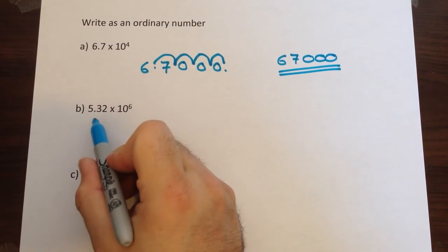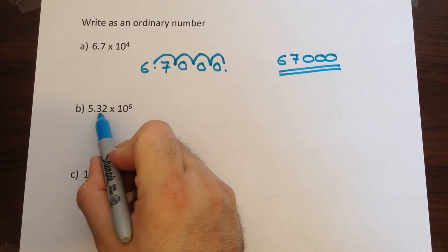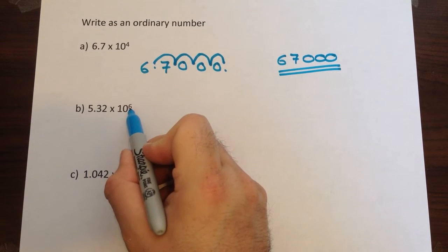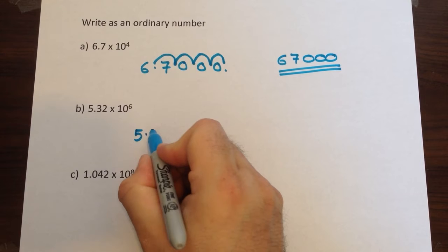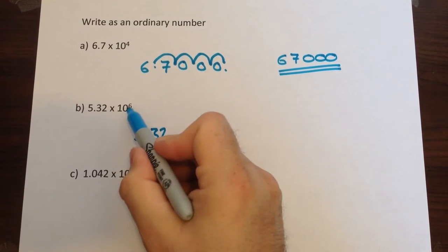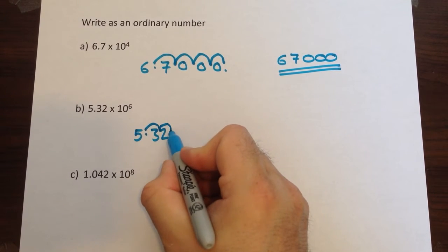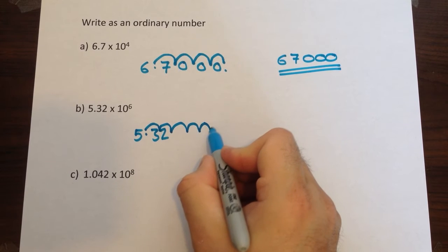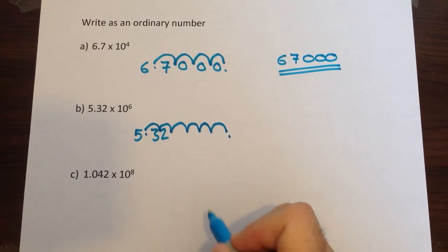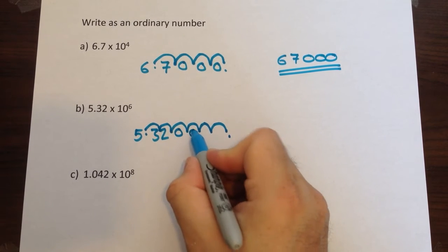So same method for the next one. We've got two decimal places to jump over this time. Power of 6, so we need to move six places. So 5.32, six jumps: 1, 2, 3, 4, 5, 6, decimal point's now there. Fill in the spaces with zeros.